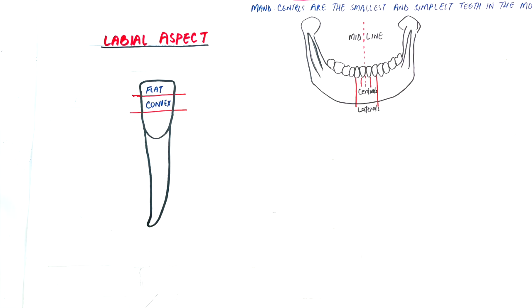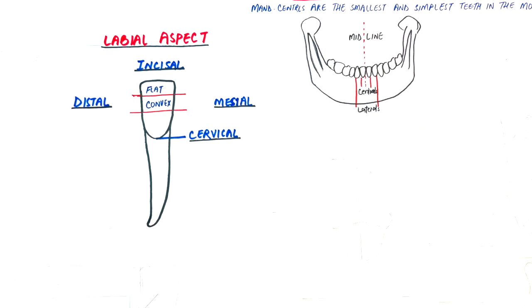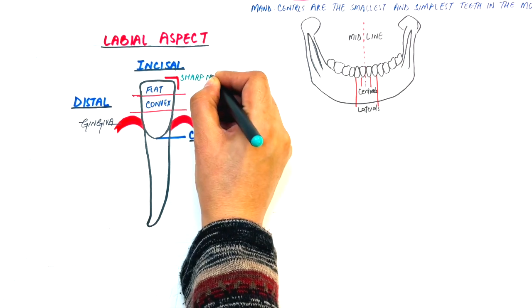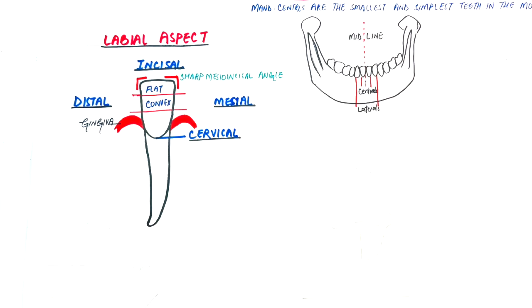Labially, the tooth has a mesial, distal, cervical, and an incisal outline. The mesial and the distal outlines taper in an almost straight direction towards the gingiva. The mesio-incisal angle, which is formed by the union of the mesial and incisal outlines, is sharp, and so is the distal incisal angle.